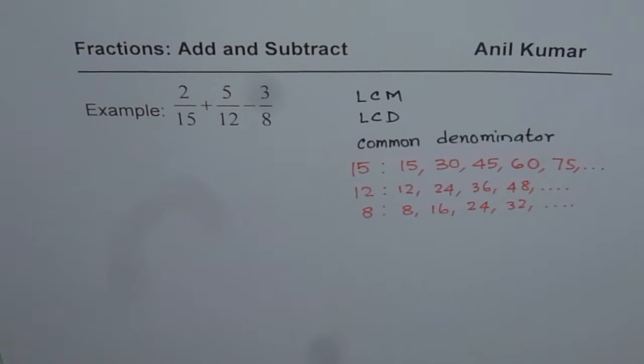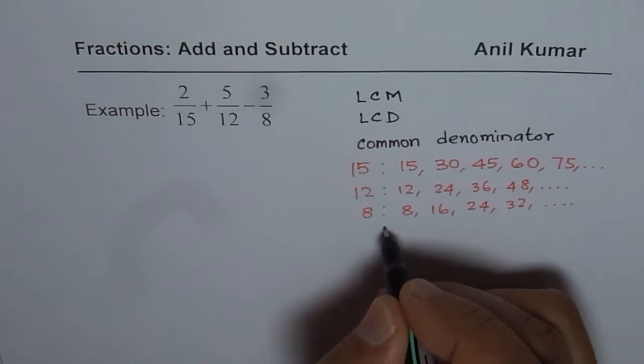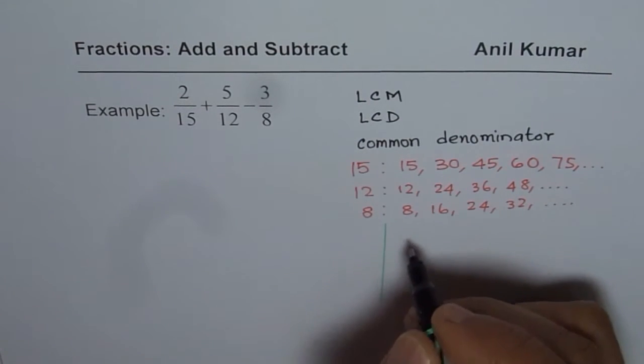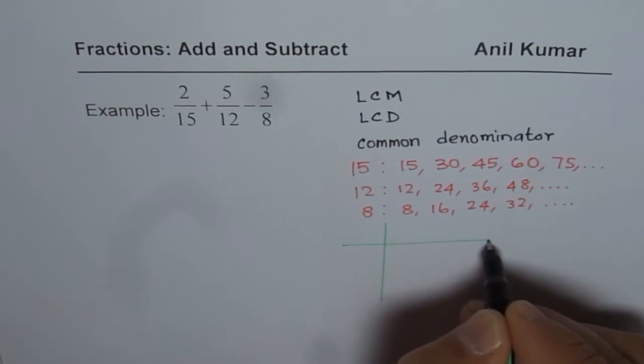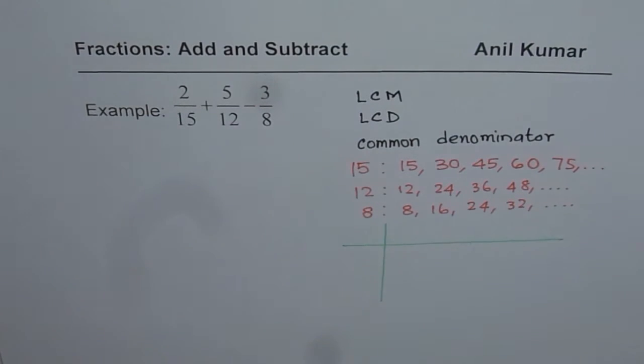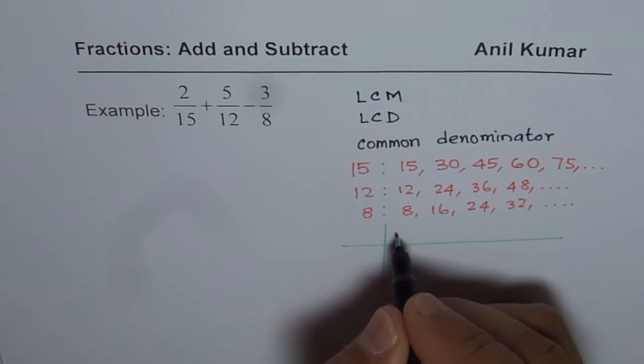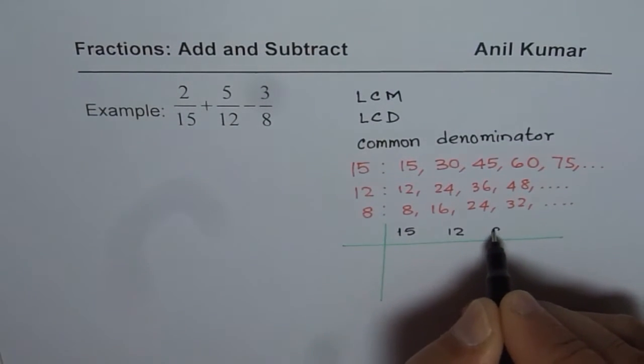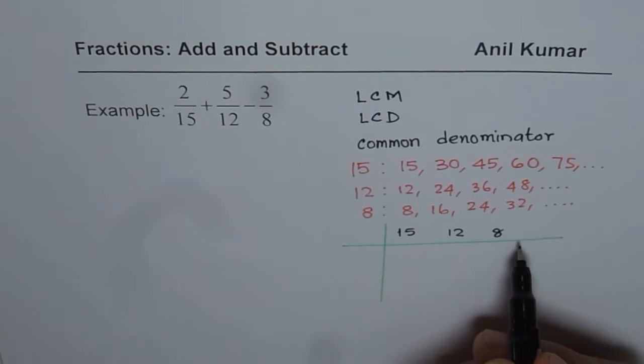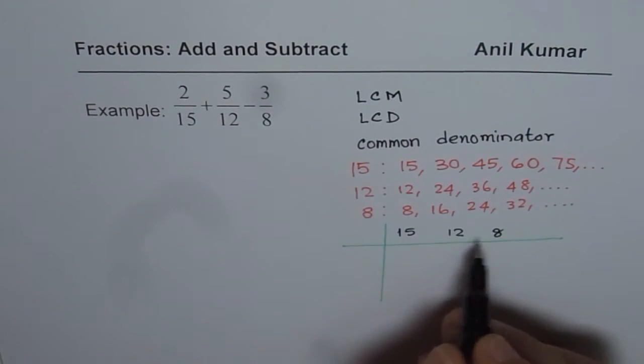Now, here is a simple method of doing it and we call it ladder division. This is what we learned when we were in school. I have few videos where I have explained this. Let me show you this method here. Write all these numbers 15, 12 and 8 and try to factor them.